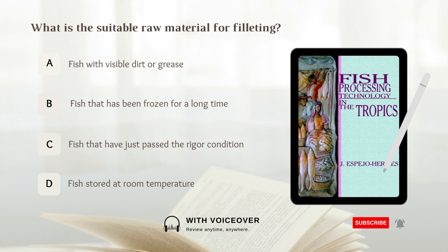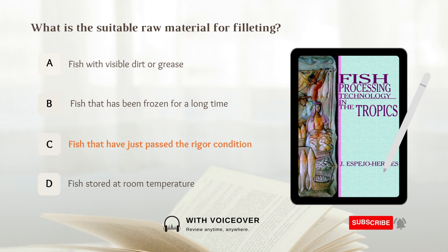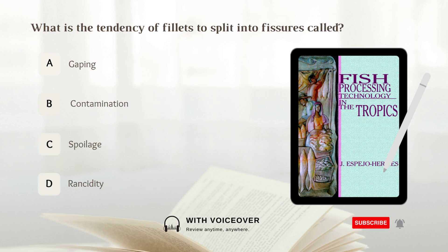What is the suitable raw material for filleting? What is the tendency of fillets to split into fissures called? A. Gaping. B. Contamination. C. Spoilage. D. Rancidity. Answer: A. Gaping.